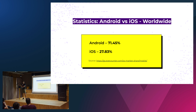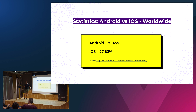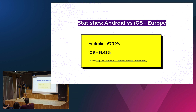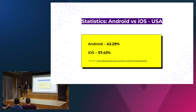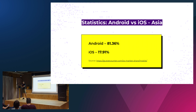I have some data here to make the presentation interesting. I use this website statcounter.com which can show you the distribution of Android versus iOS versus other platforms worldwide and in different regions. Worldwide, Android is 71%, iOS 27%. In Europe, 67% versus 31%. In the USA, iOS is winning — 57 against 42. In Asia, Android is crushing it: 81% compared to 17%.